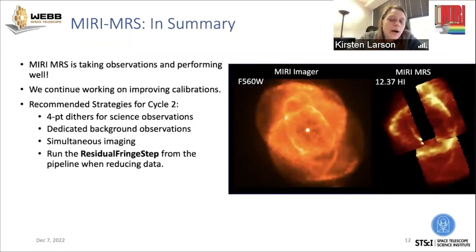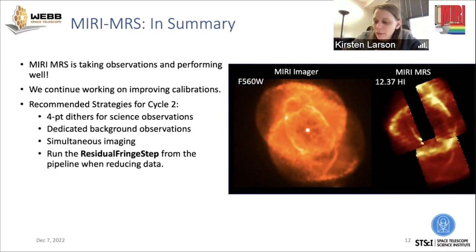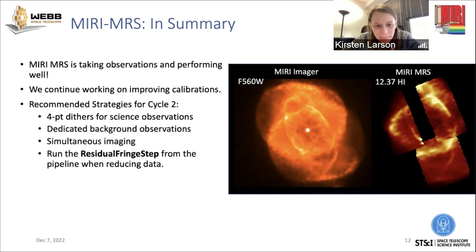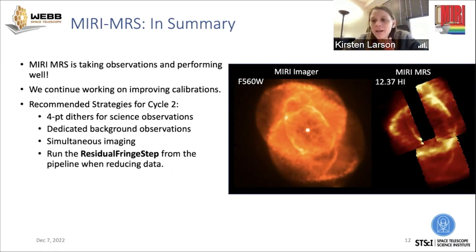In summary, MRS is performing well and we continue to work on some of the calibrations. Our updated recommended strategies for cycle two are: use four-point dithers for all science observations, take a dedicated background observation, use the simultaneous imaging, and if you're concerned about fringing in your data, reprocess it yourself using the residual fringe step correction.